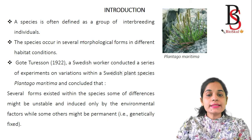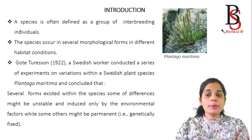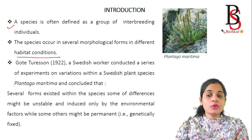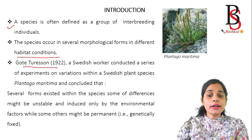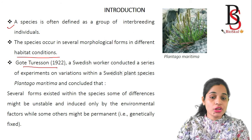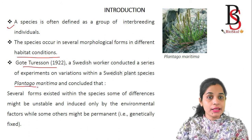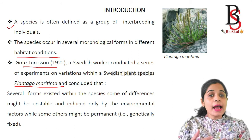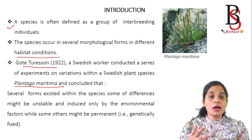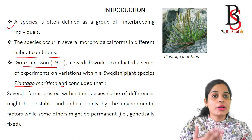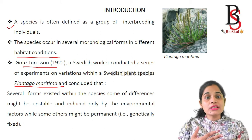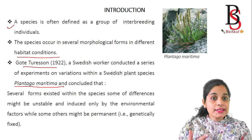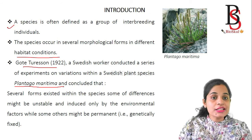We know that a species is defined as a group of interbreeding individuals of a population, and species occur in several morphological forms in different habitat conditions. A Swedish worker known as Tauracian, in the year 1922, conducted a series of experiments on variation in a Swedish plant named Plantago maritima. He concluded that several morphological forms existed within the species and that differences may be unstable — that is, reversible and induced by environmental factors — or the changes may be permanent, that is, genetically fixed. That leads to the formation of different types of species and brings evolutionary changes in plant taxonomy.